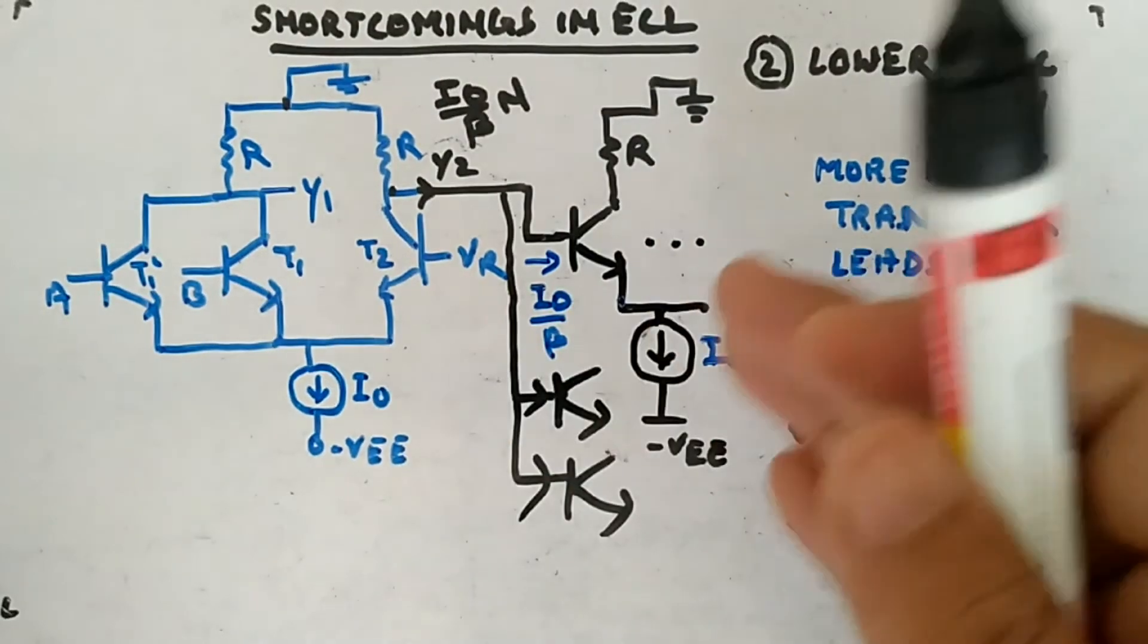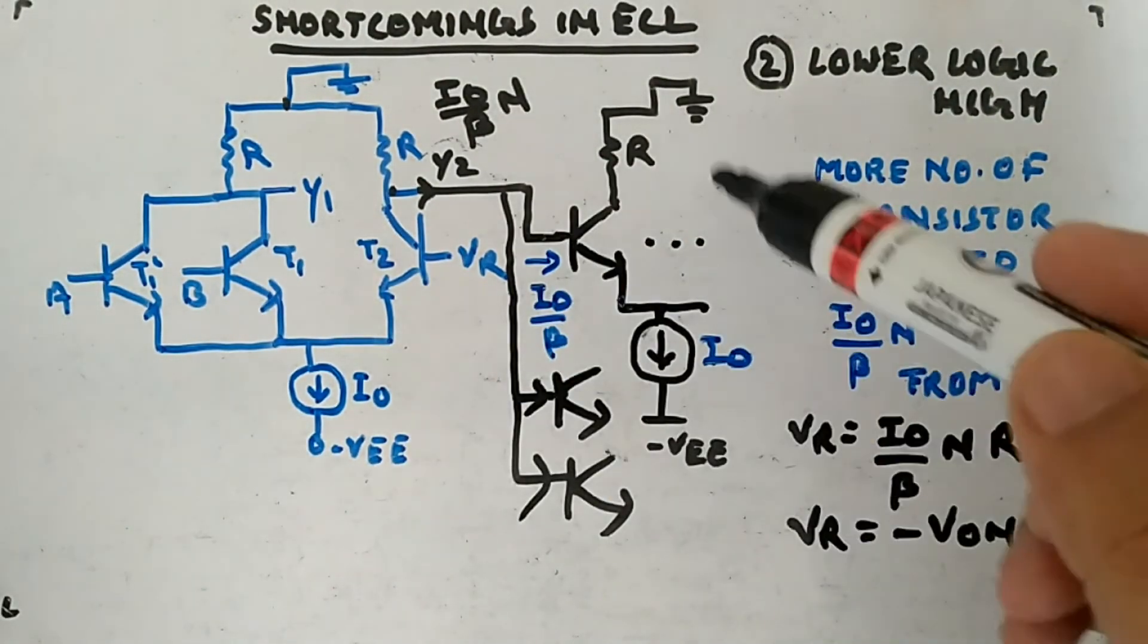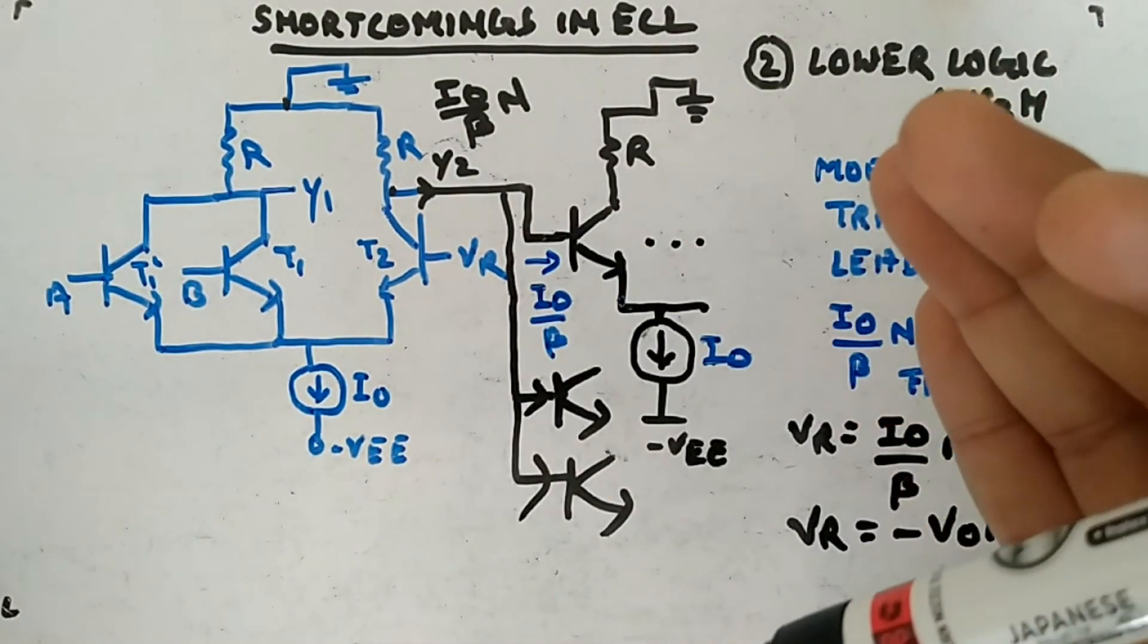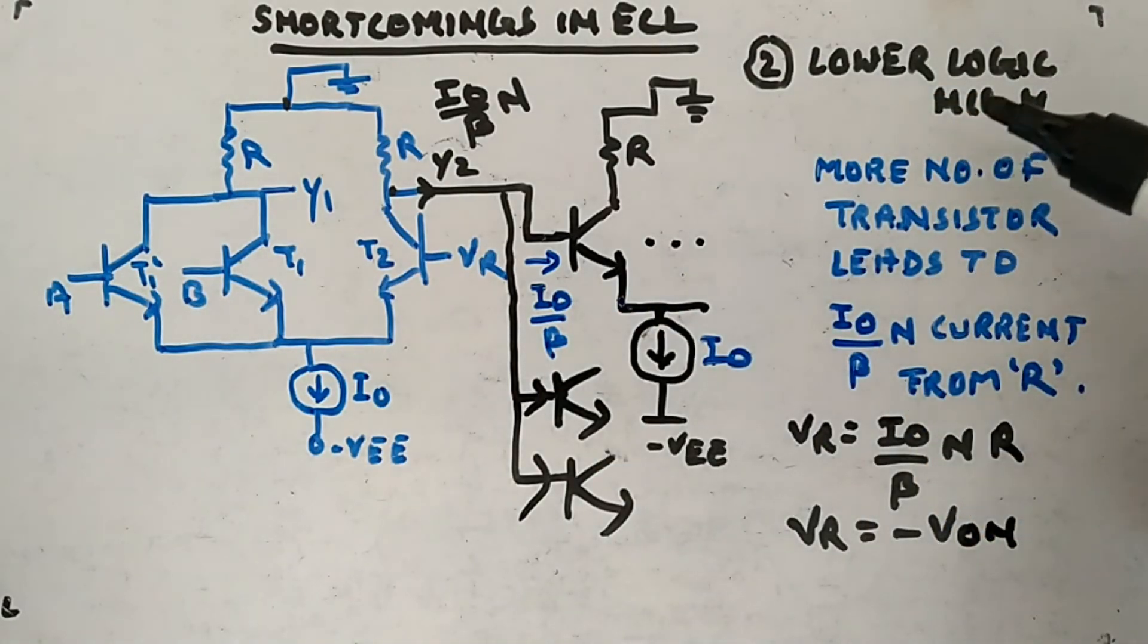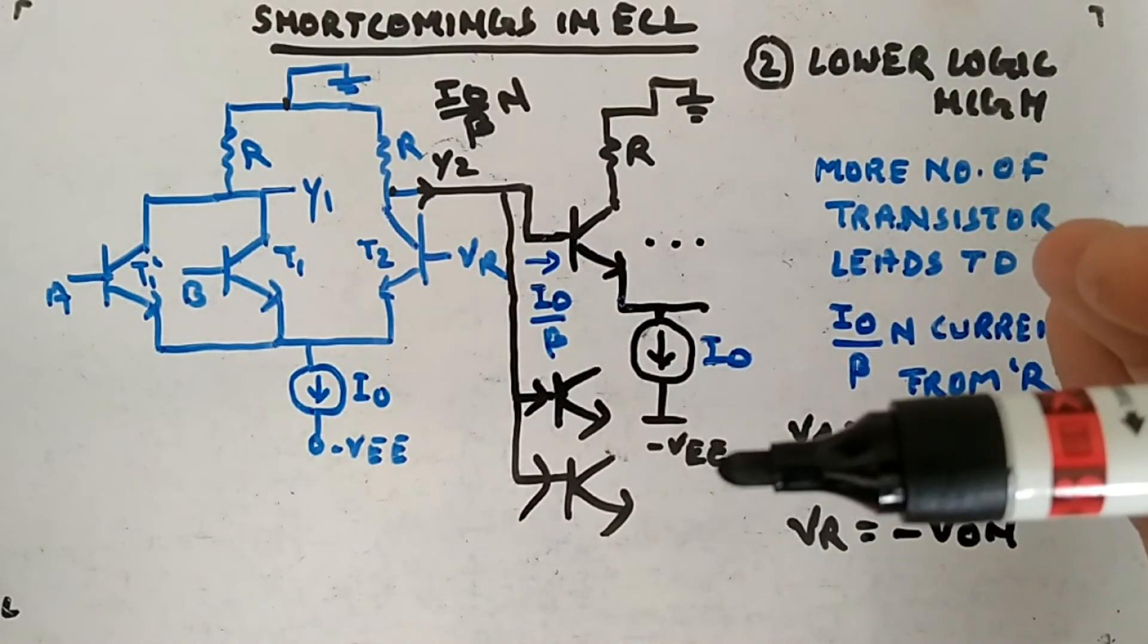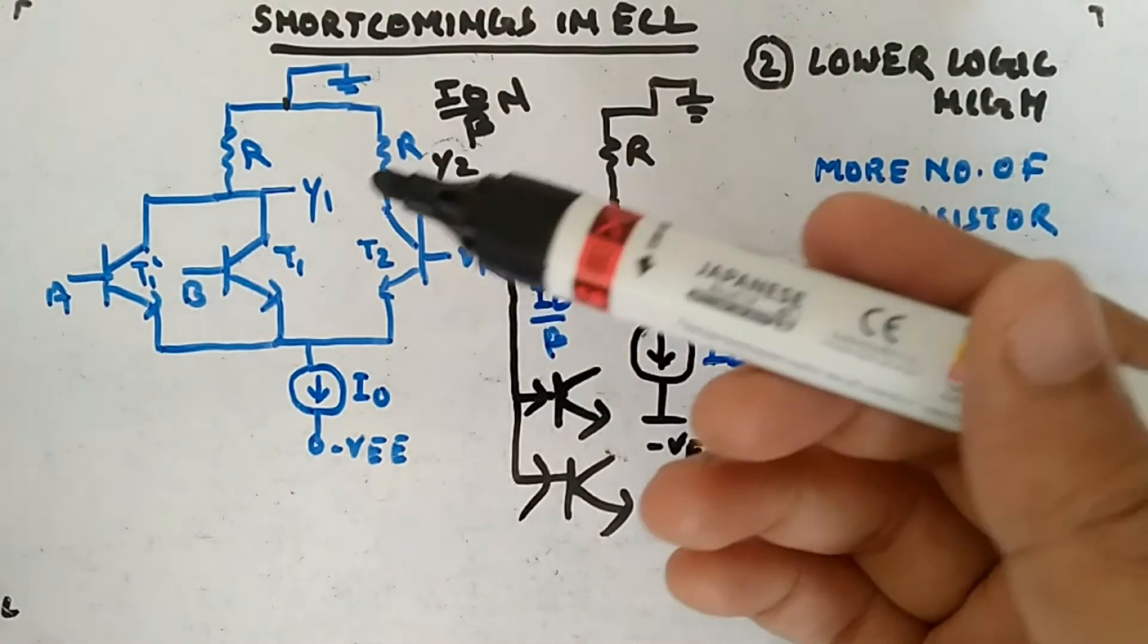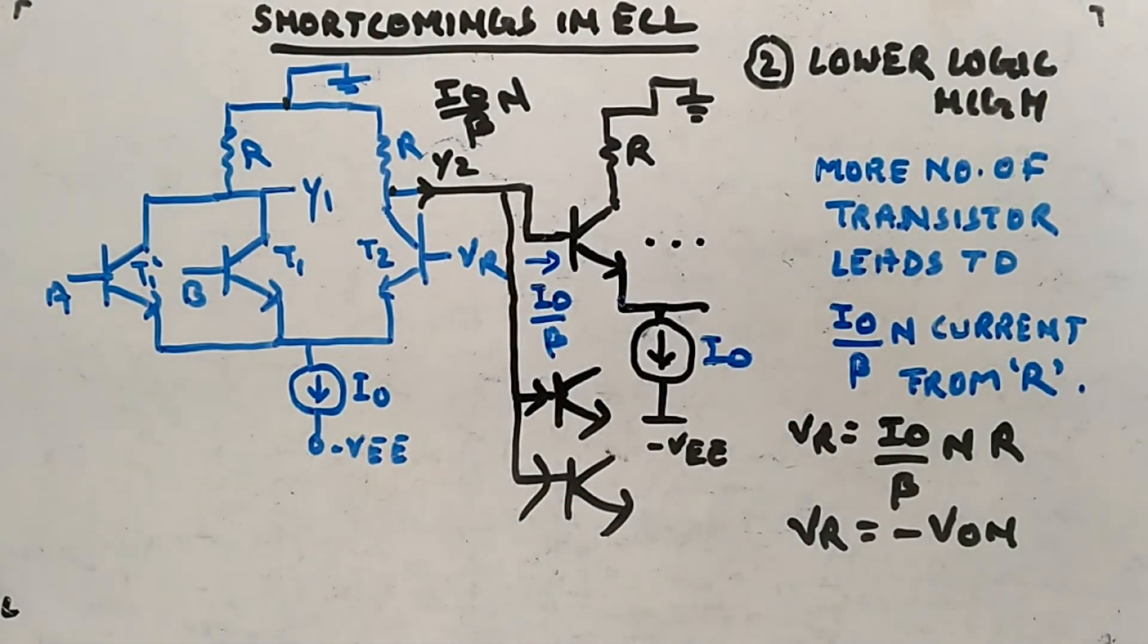In high speed circuits, you deliberately keep logic low and logic high very close to each other because we want fast switching. But if this phenomenon occurs, your logic high will decrease even more and that may cause a problem. This is another problem: logic high gets reduced, voltage gets reduced. The first one was mismatch of the inputs. These two problems were there in ECL.